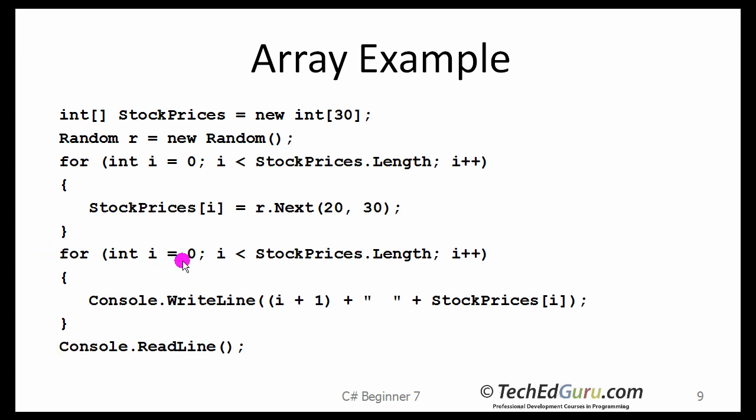Again, the for loop begins with zero and ends at length minus one. And what it is going to print is the number, the day number in this case, and the ending stock price for that day. Please run this example and see the output that you get. Every time you run this example, you are going to get a different output because you are going to fill in the array with different sets of random numbers.